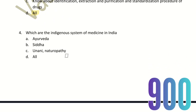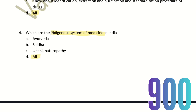Fourth question: Which are the indigenous systems of medicine in India? In India there is also an indigenous system of medicine. The choices are Ayurveda, Siddha, Yunani, Naturopathy, and all. The right answer is option D — all. Ayurveda, Siddha, Yunani, and Naturopathy are all considered indigenous systems of medicine in India.